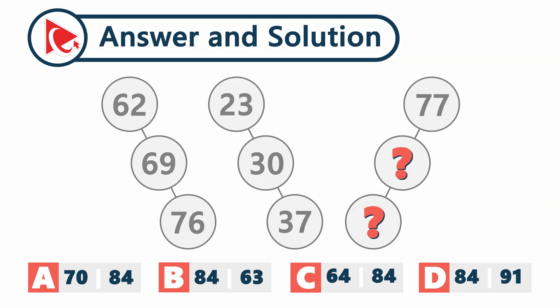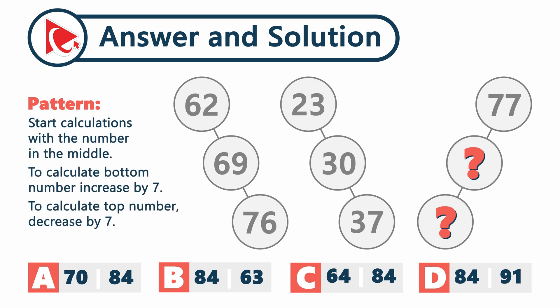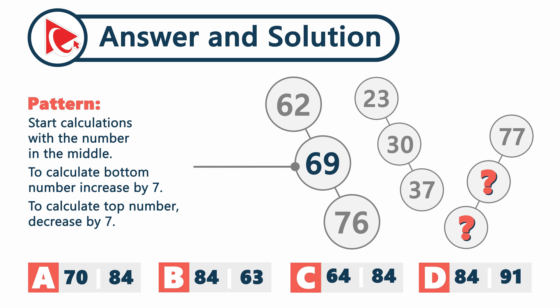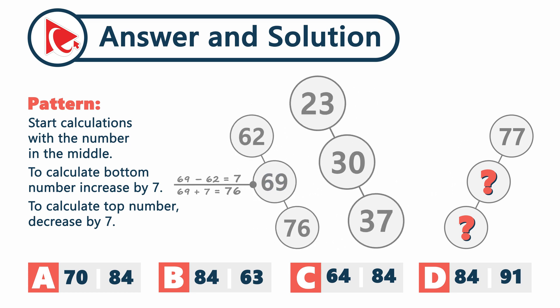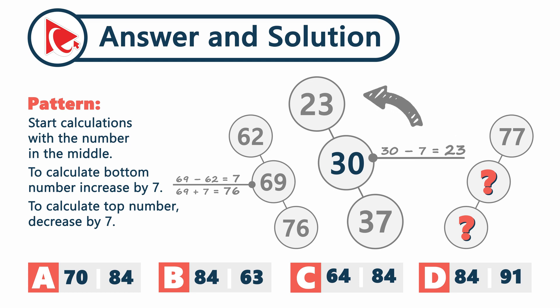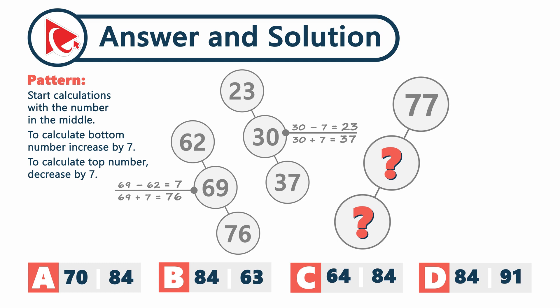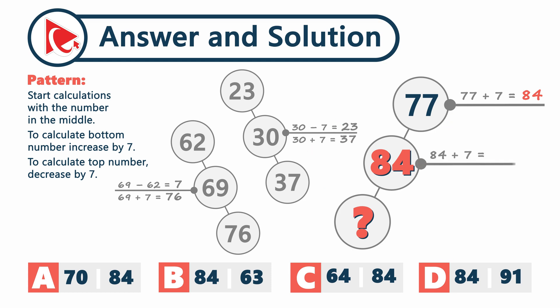Time's up. Are you ready with your answer? You need to start the calculation with the number in the middle. To calculate the bottom number, increase the middle number by 7. To calculate the top number, decrease it by 7. Let's look at the example: the middle number in the first shape is 69. 69 minus 7 equals 62, and 69 plus 7 equals 76. The middle number for the second shape is 30: 30 minus 7 equals 23, and 30 plus 7 equals 37. Now it's the special moment of truth. We only have the top number, which is 77, so we need two addition operations: 77 plus 7 equals 84, and 84 plus 7 equals 91. So the correct answer here is choice D: 84 and 91.